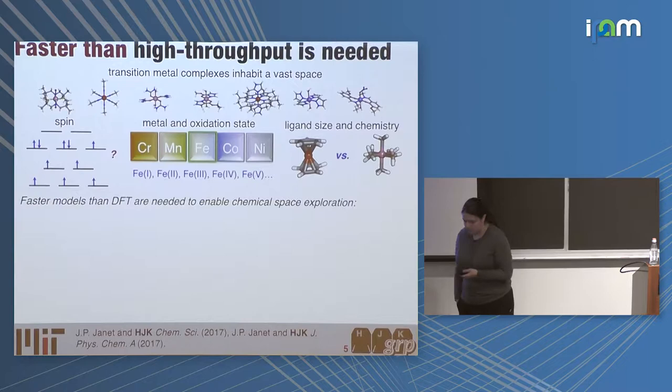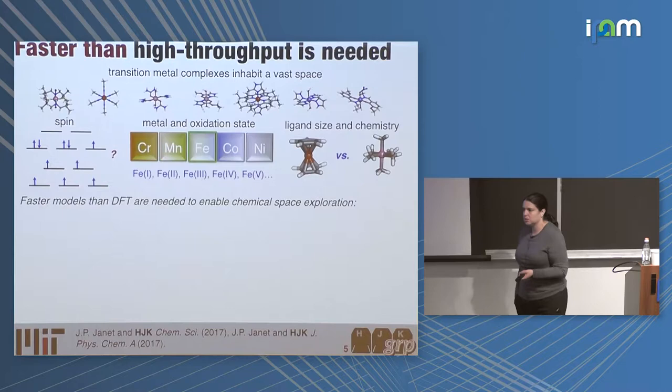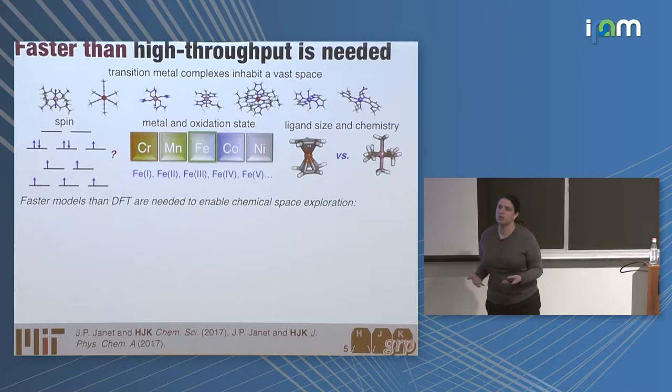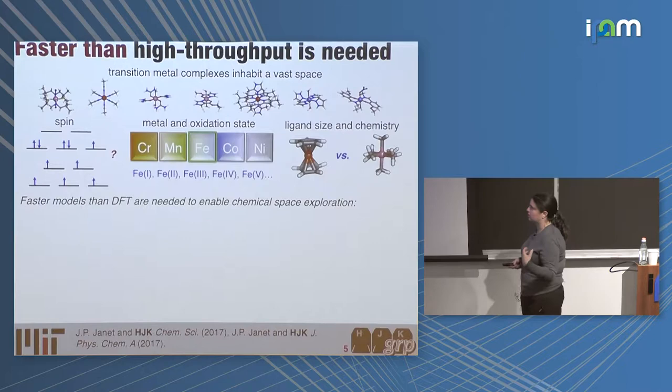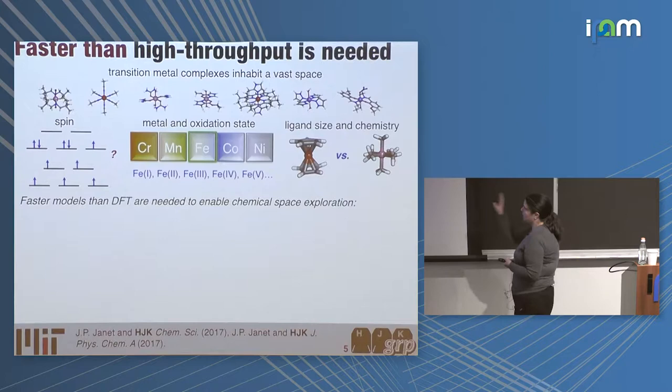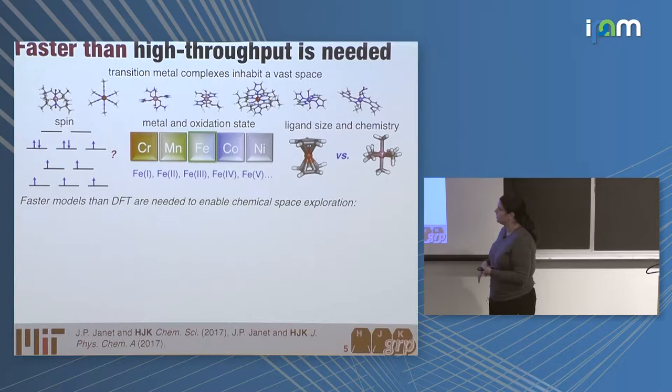Our motivations for getting into machine learning were very directed and very different from what most of the community is thinking about. The community is thinking about: can we build the best neural network potential, how do we do on organic chemistry, how do we do on closed-shell systems? The minute you introduce variable spin and oxidation state, as well as the size of the systems we think about, our priorities are dramatically shifted.